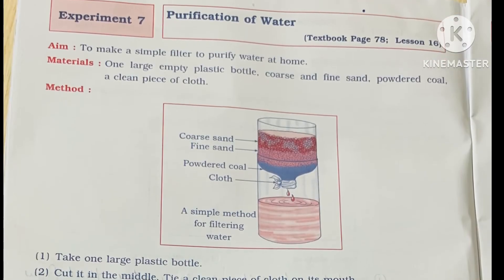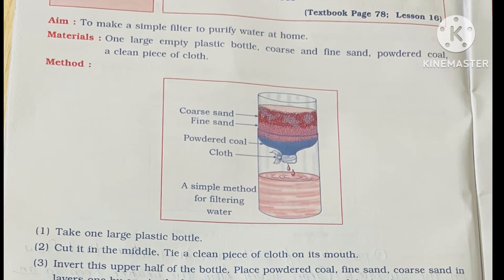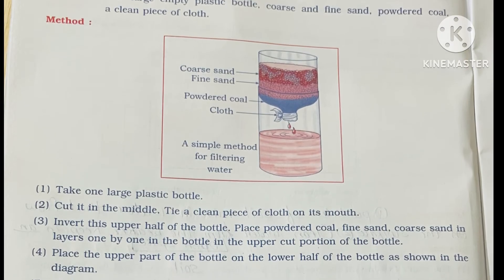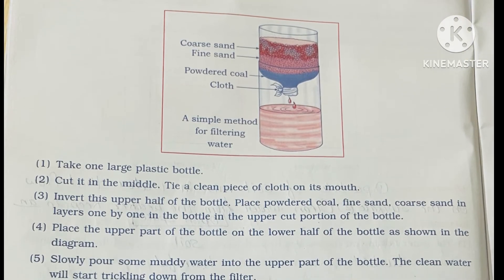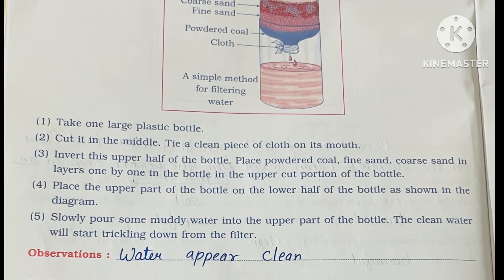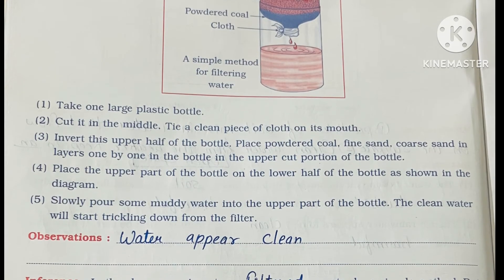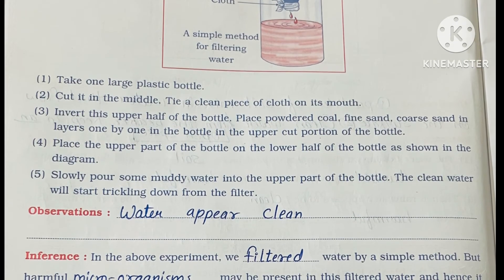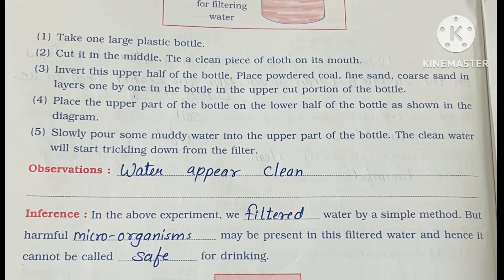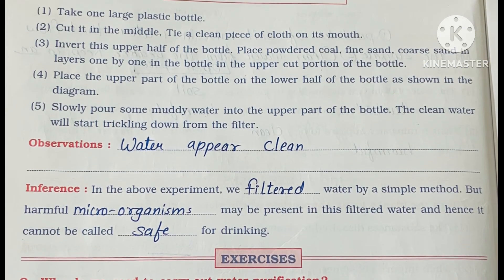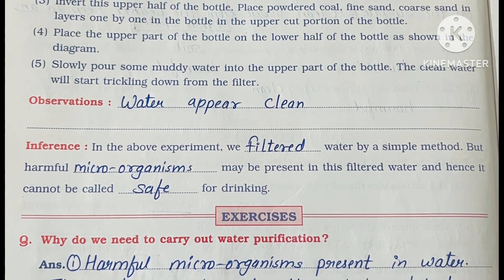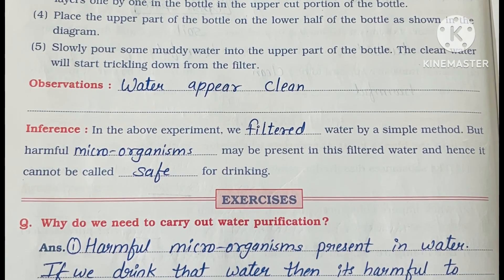Experiment number 7 is the purification of water. If we want to purify water, we can use sand, rock, or charcoal. Even water that looks clean is not actually clean because it contains microorganisms that are harmful for our health. That is why purification is a must — whenever we drink water, we should purify it.